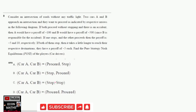Another question asked in the GATE Economics paper of 2021 was about the pure strategy Nash equilibrium. Consider an intersection of roads without any traffic light, where two cars, Car A and Car B, approach an intersection and want to proceed as indicated by their respective arrows in the diagram. If both proceed without stopping, there is an accident.